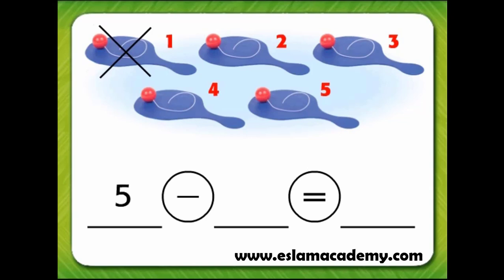This minus sign tells us to subtract. What number goes in the second blank? The number in the second blank of a subtraction sentence tells how many items are being taken away. There is one paddle ball crossed out, so the number taken away is one. We'll write one in the second blank.